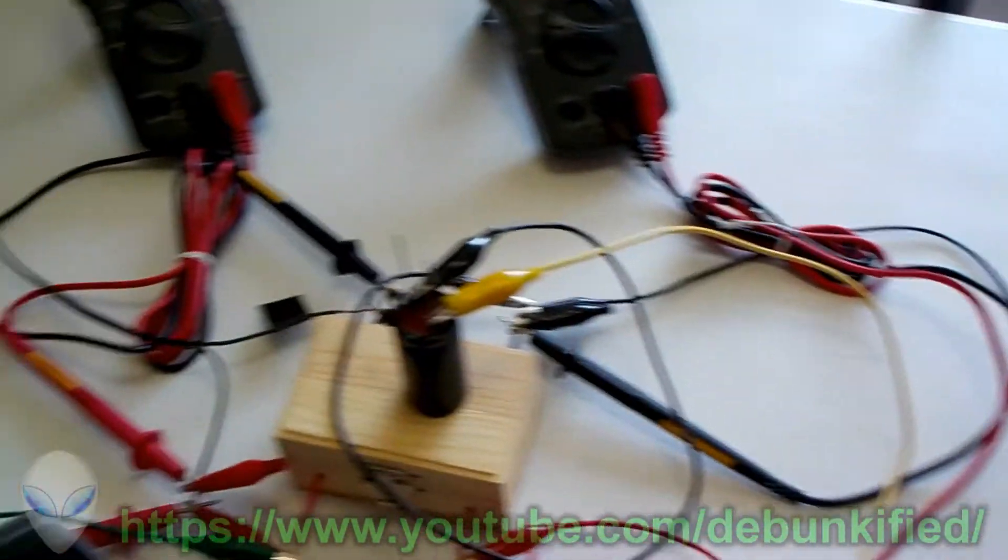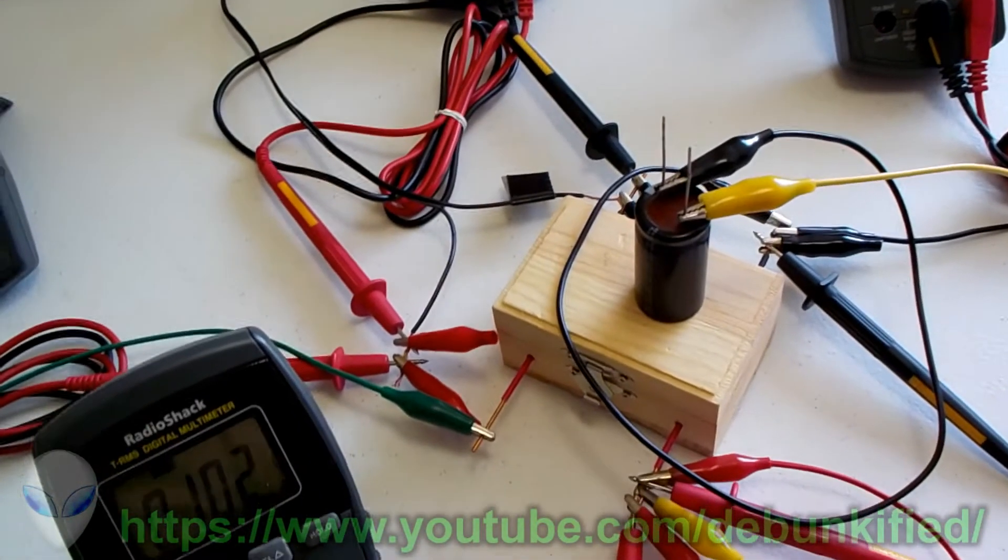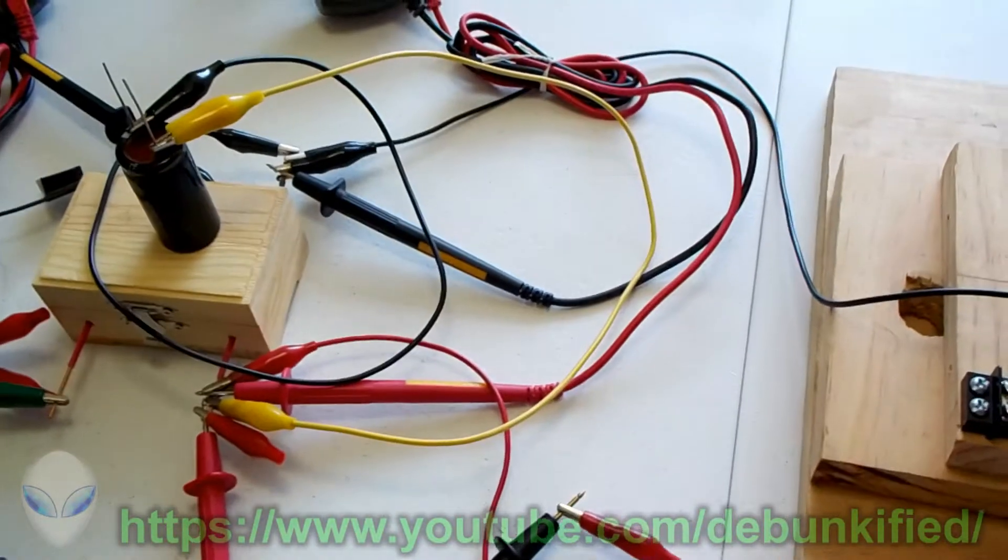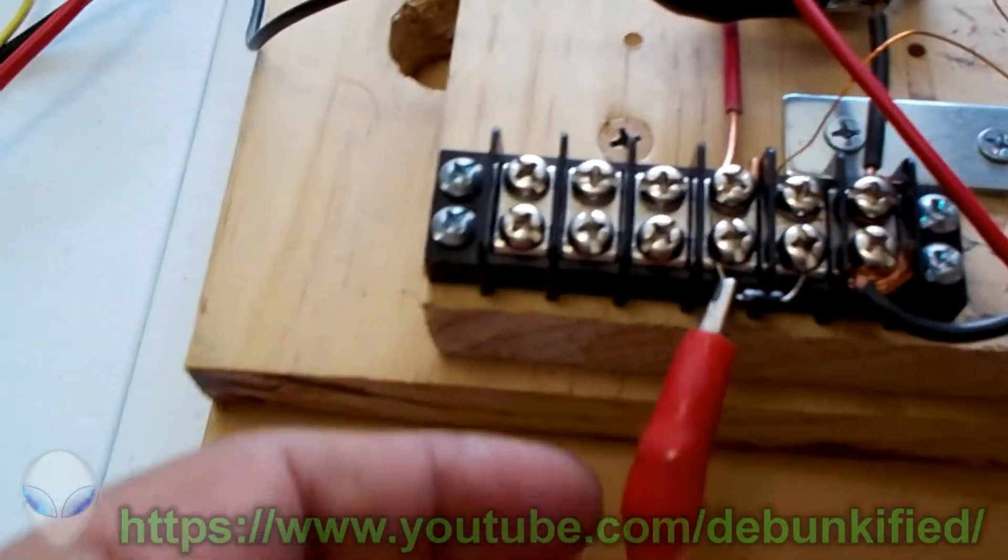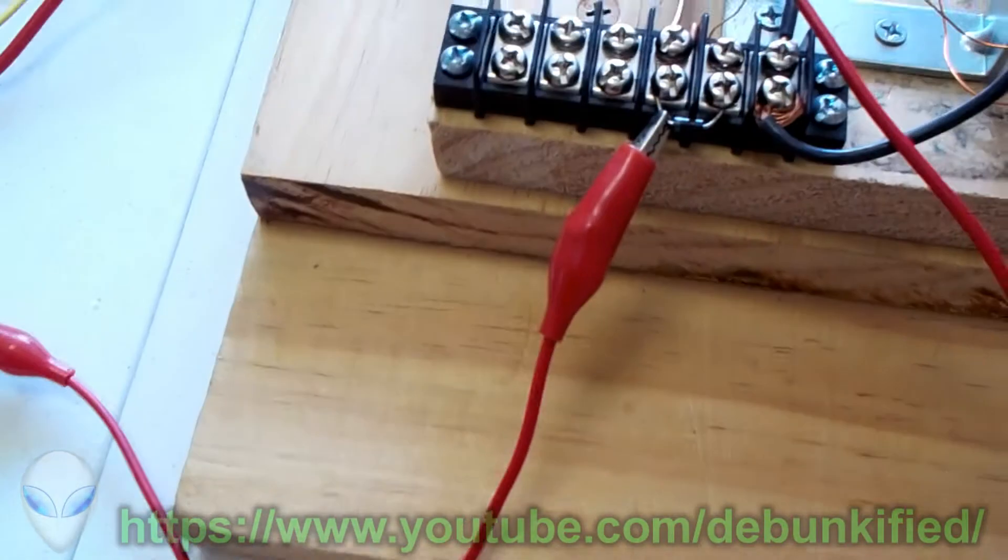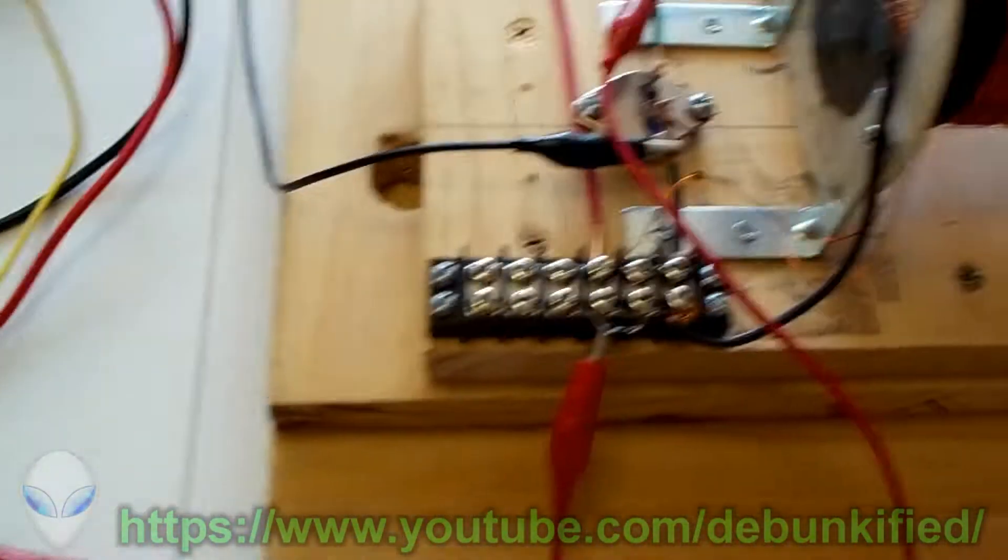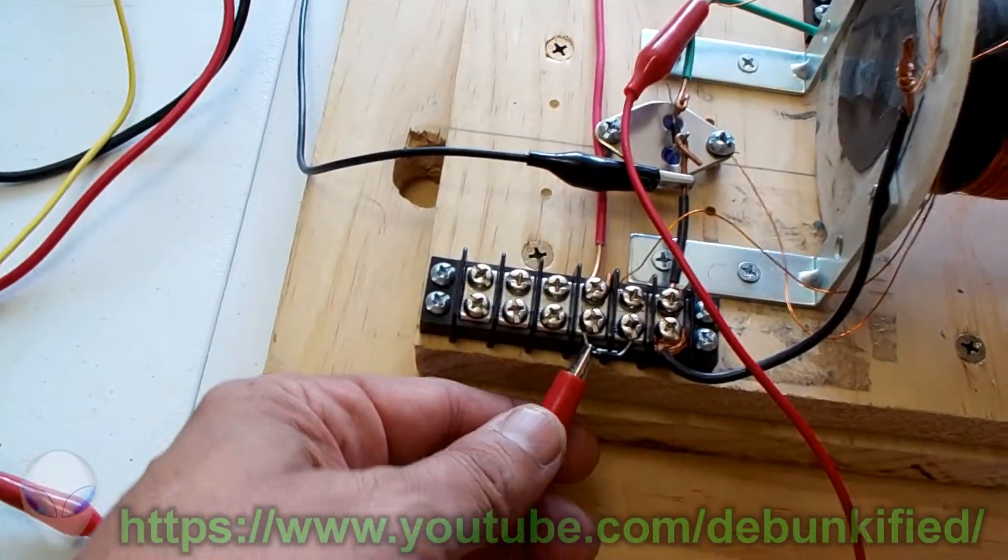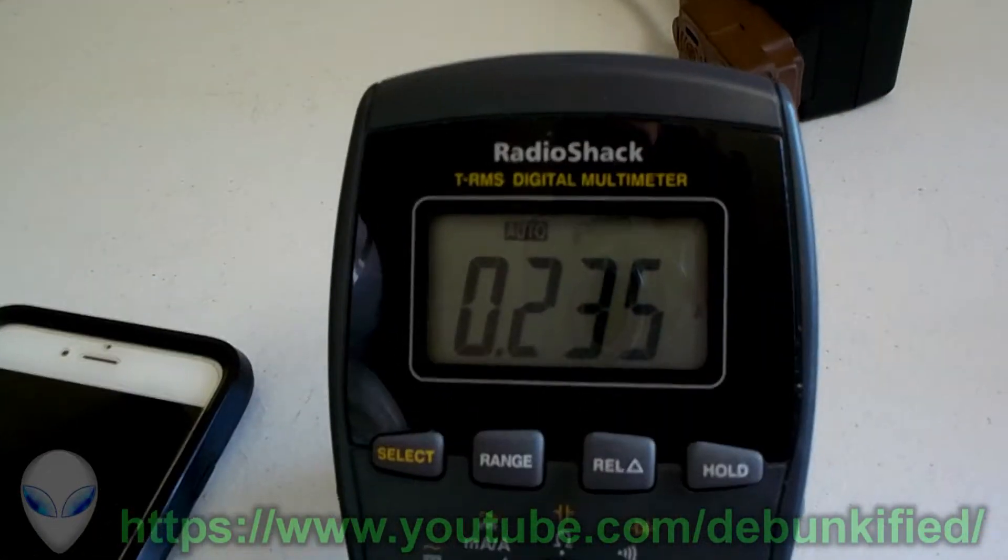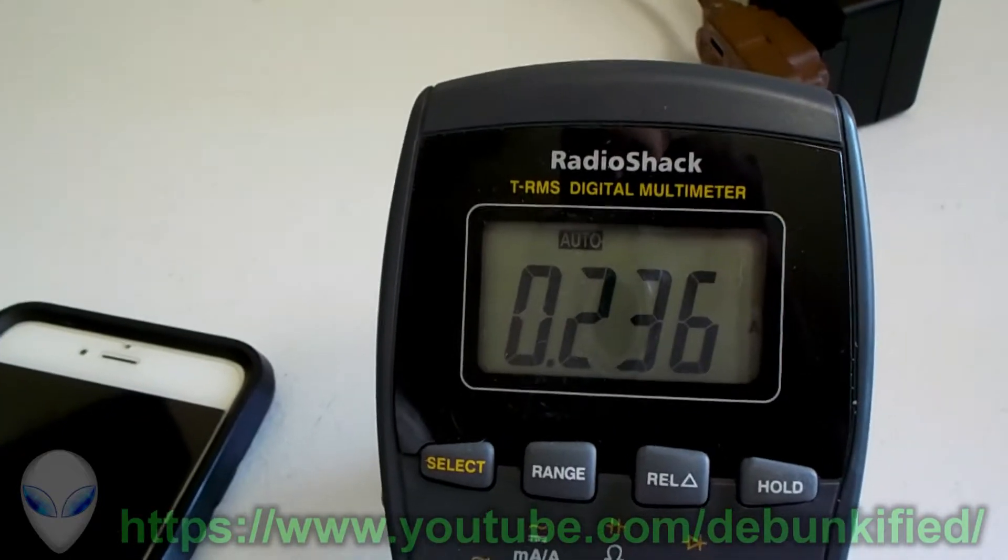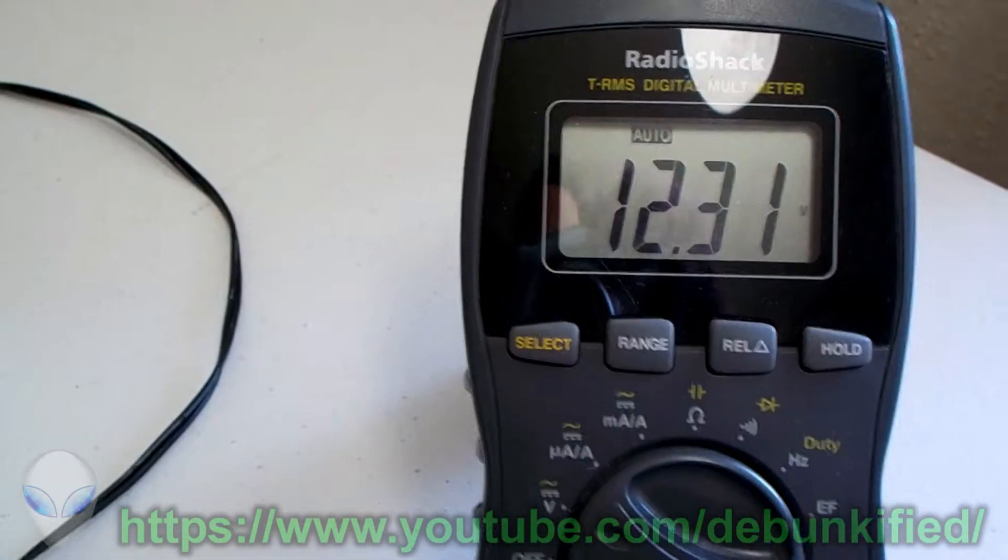First I would like to show you something. This is a return going back to the input here of our box. I want to disconnect that. I want you to now look at the input current. It's going up quite drastically to about 0.236 amps at 12.31 volts.